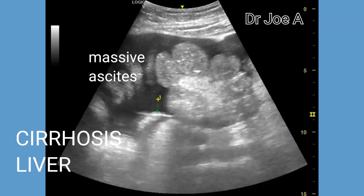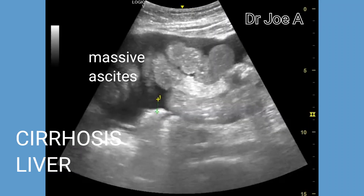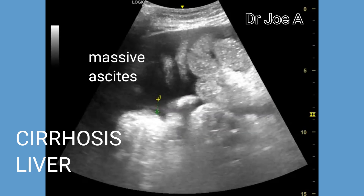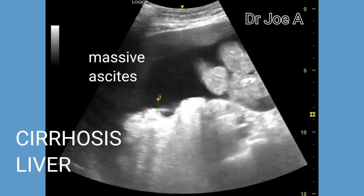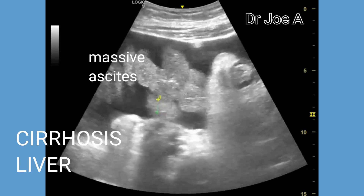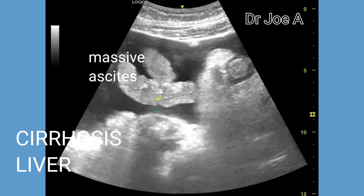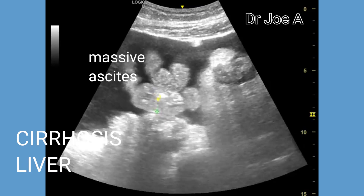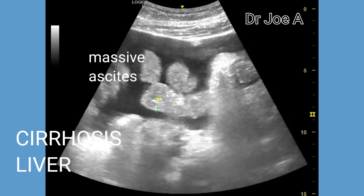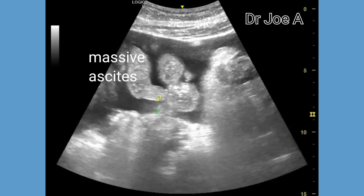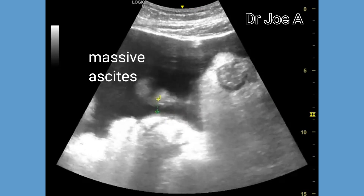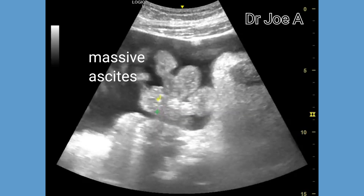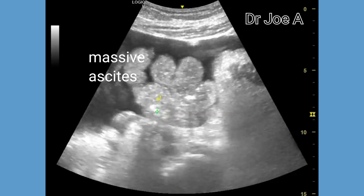This is a patient of cirrhosis of liver who presented with massive distension of abdomen. Ultrasound shows significant ascites. Small bowel loops are seen floating in the ascitic fluid. Fluid is seen extending from the epigastrium and hypochondrium all the way up to the suprapubic region. Lack of particulate matter in the fluid suggests that this is serous ascitic fluid.